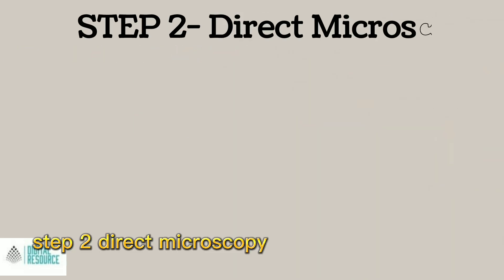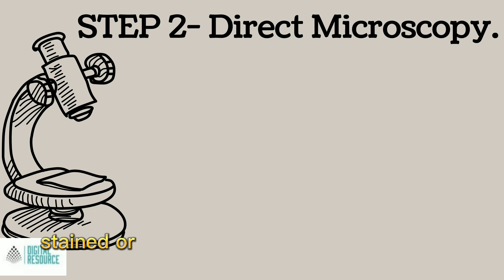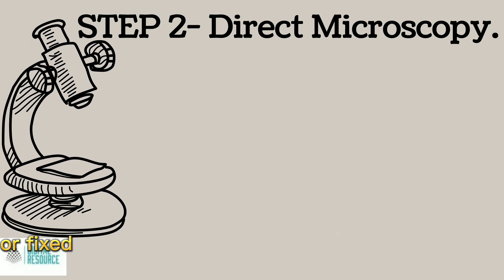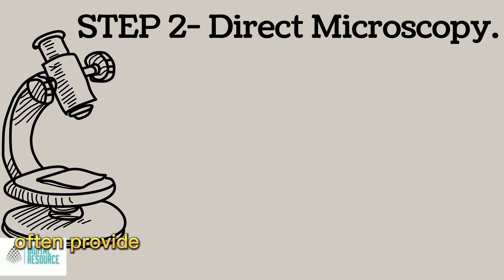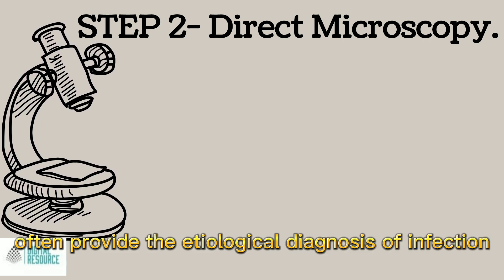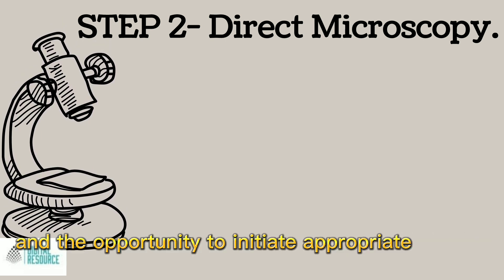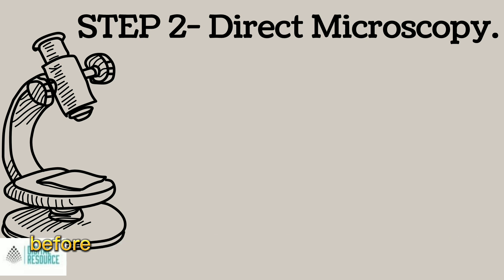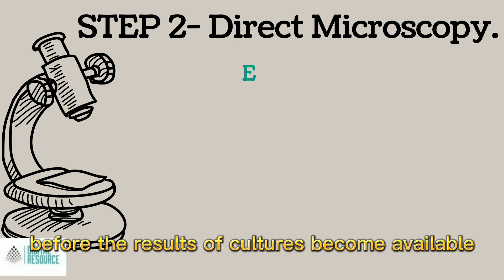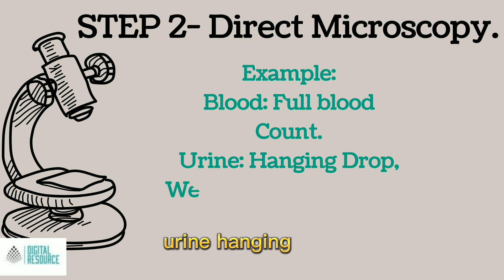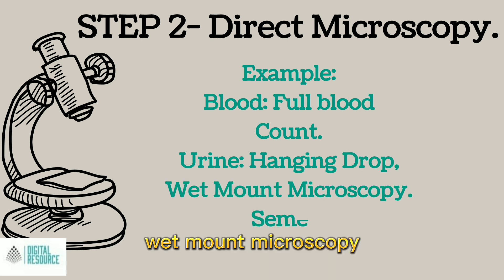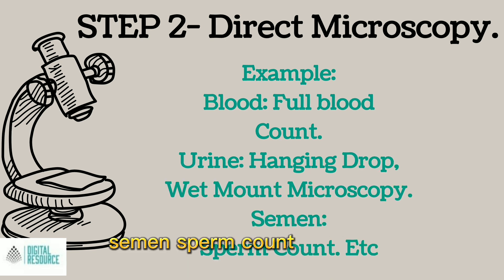Step 2: Direct Microscopy is the examination of stained or unstained wet mount preparations, or fixed stained smears of clinical material, which can often provide the etiological diagnosis of infection and the opportunity to initiate appropriate therapy before the results of cultures become available. Blood — full blood count. Urine — hanging drop, wet mount microscopy. Semen — sperm count, etc.